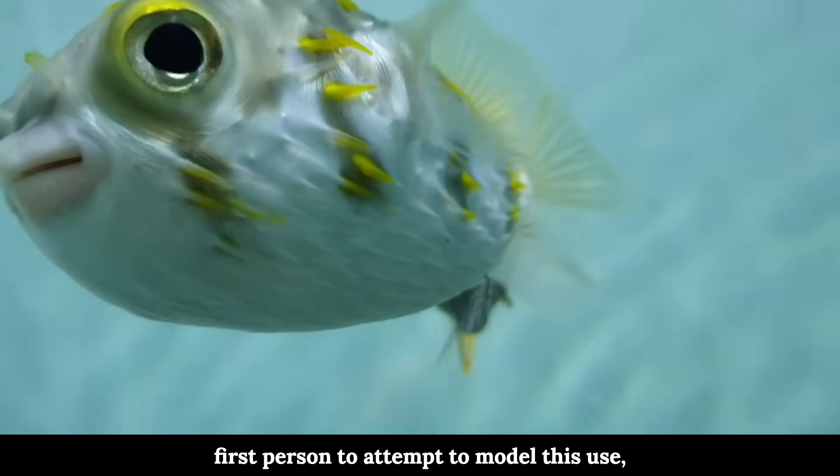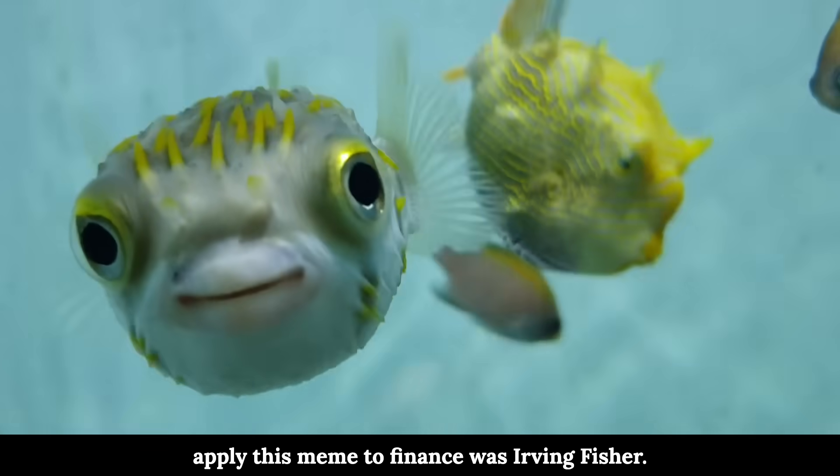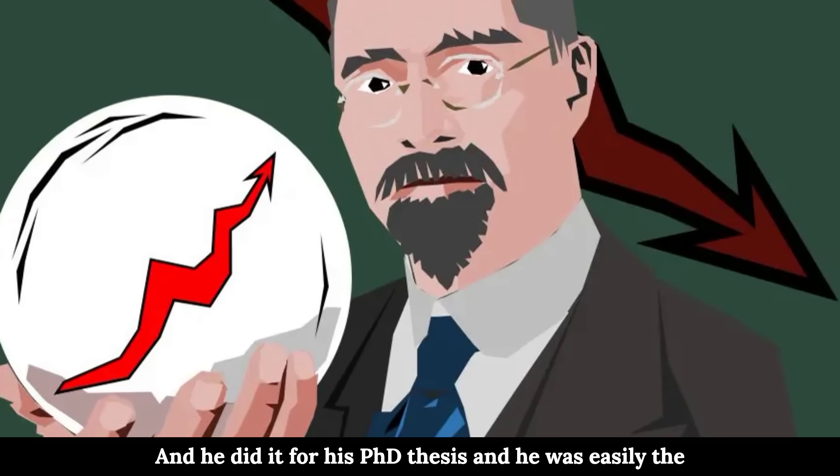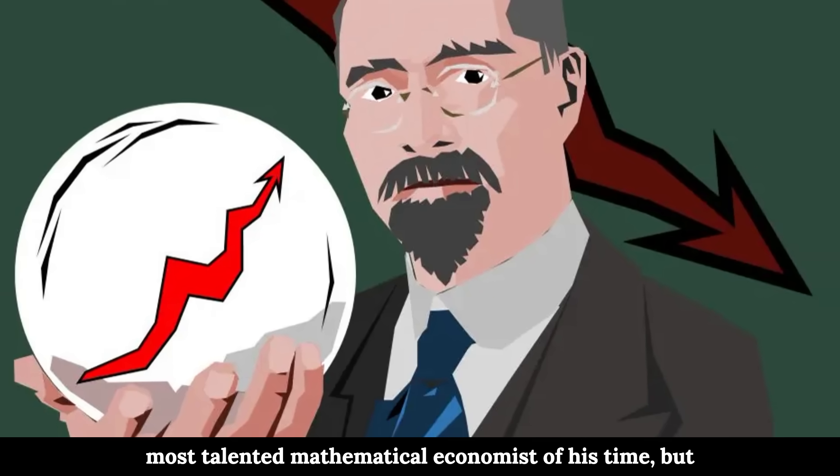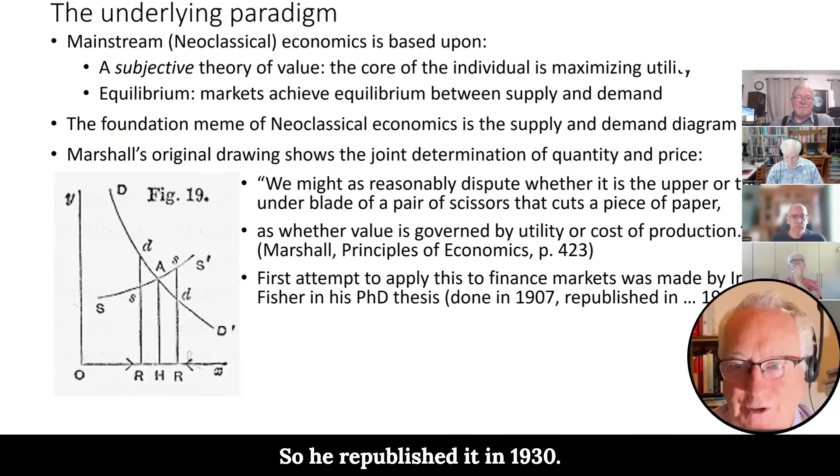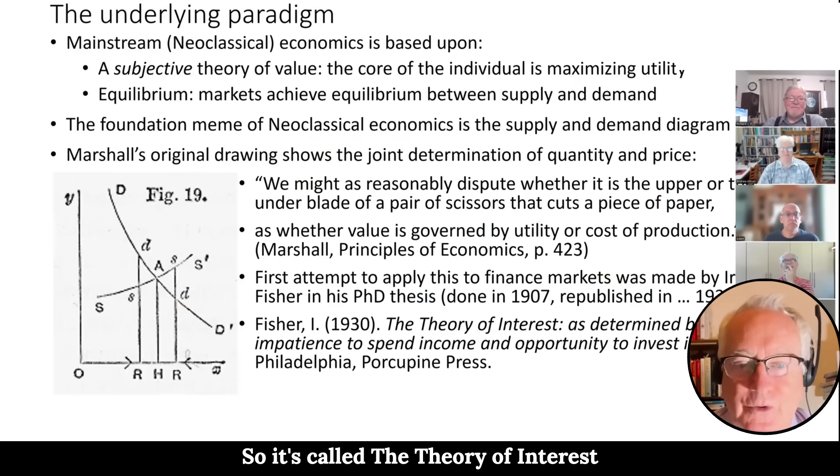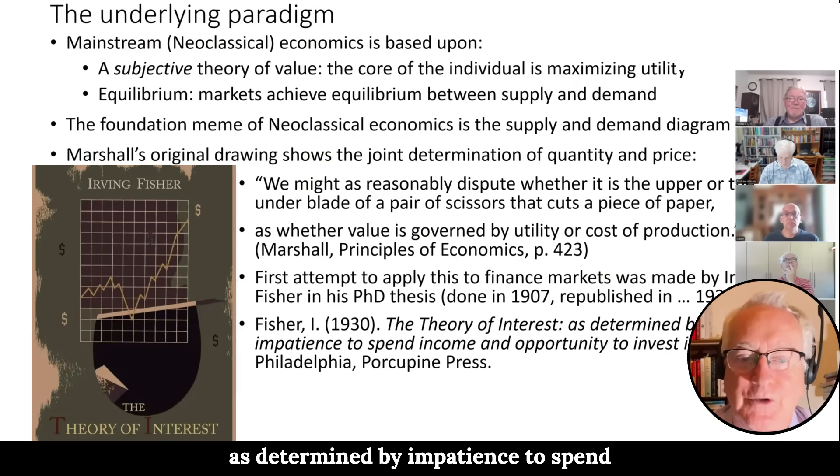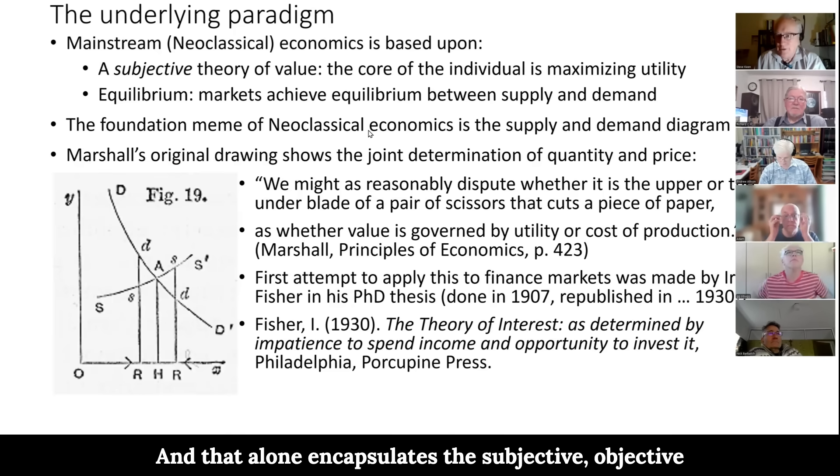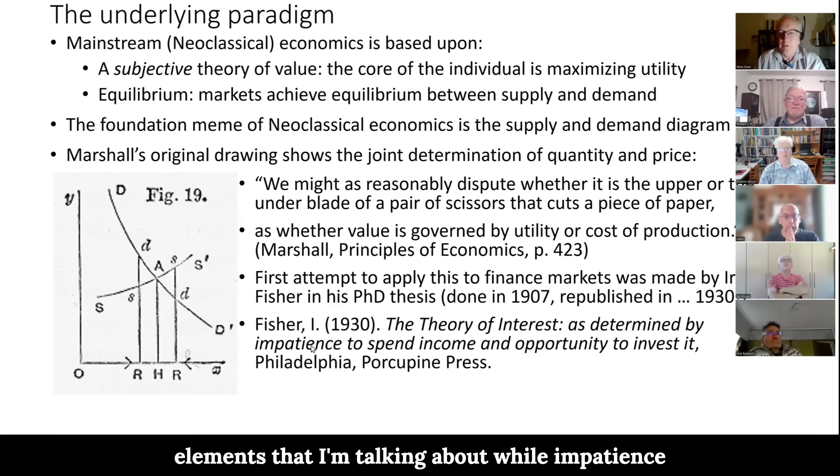And the first person to attempt to model this, apply this meme to finance, was Irving Fisher. And he did it for his PhD thesis and he was easily the most talented mathematical economist of his time, but he thought it didn't get sufficient reception in 1907. So he republished it in 1930. And I think this means another reason to give Irving Fisher the prize for the man with the world's worst timing. So it's called the theory of interest, as determined by impatience to spend income and opportunity to invest it. And that alone, the subjective and objective elements that I'm talking about, while impatience is subjective, opportunity to invest is objective.